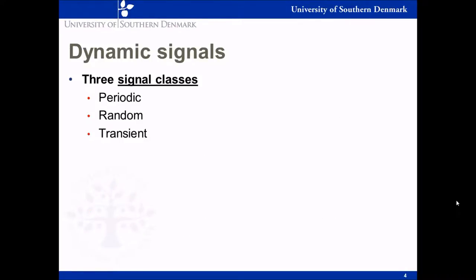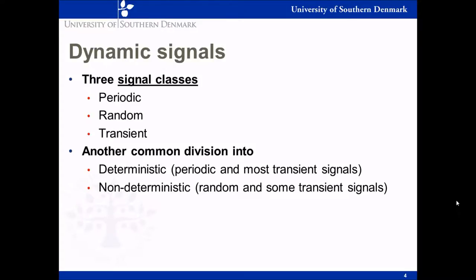Dynamic signals, many times we divide signals into three classes: periodic, random, and transient. It is, of course, not the only way you can divide signals. You can also classify signals as either deterministic or non-deterministic. Deterministic signals are typically signals that, if we know a particular part of them, we have an expression that will also allow us to compute the values before and after the part that we actually know. Non-deterministic signals, on the other hand, we can never predict what they will be no matter how long we have observed them. Typically, non-deterministic signals are random and some transient signals, whereas the deterministic signals are periodic and most transient signals.